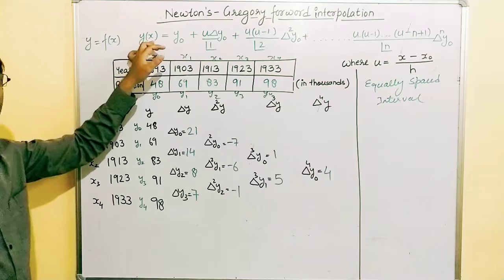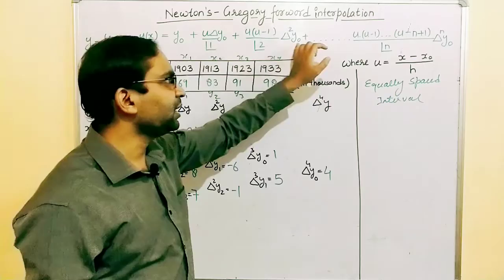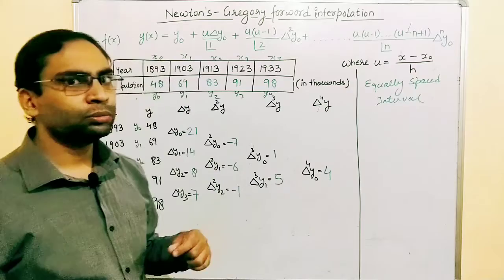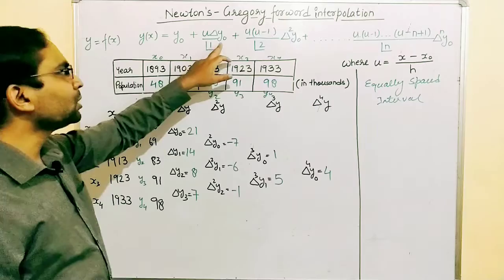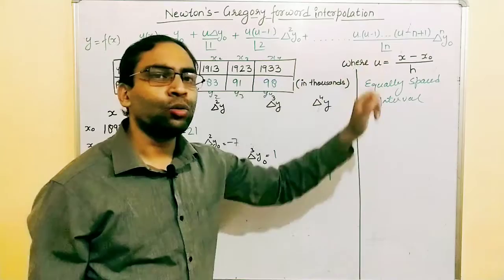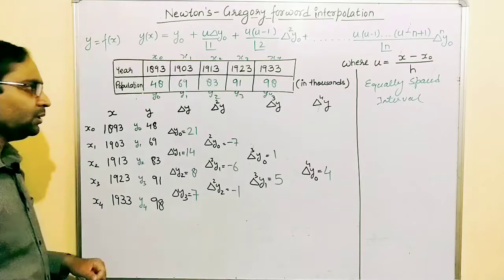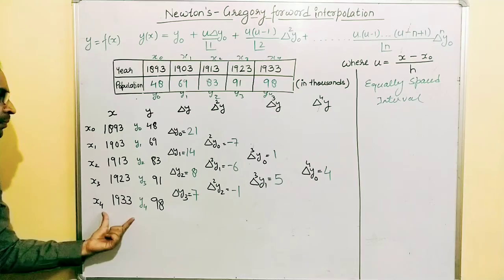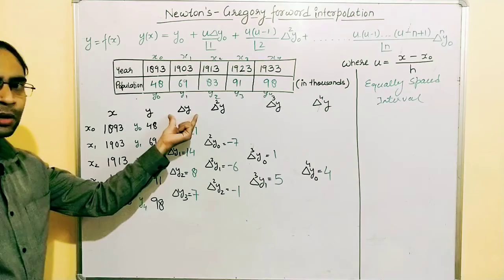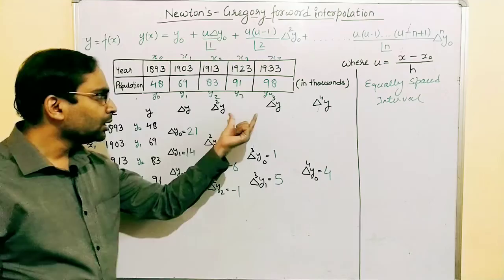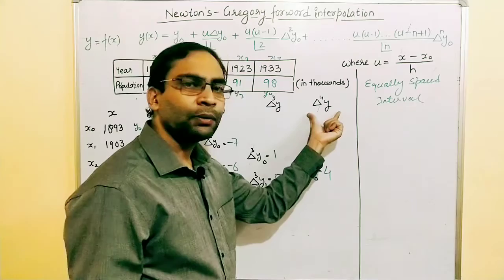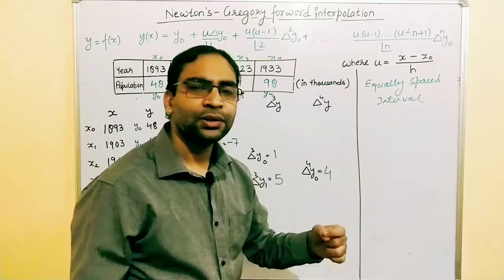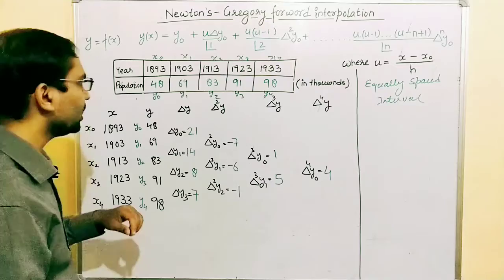Now let's talk about forward differences. Forward difference is one of the finite differences used to get the values inside the interpolation formula. To evaluate Δy0, Δ²y0, Δ³y0 and so on, we need to create the forward difference table. The table has columns: x, y, first forward difference Δy, second forward difference Δ²y, third forward difference Δ³y, and fourth forward difference Δ⁴y. The number of forward difference columns depends on the number of data items given.